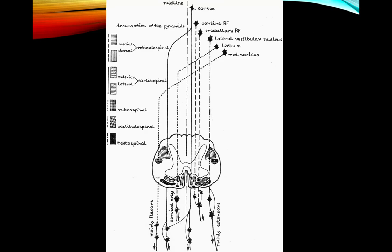All of these upper motor neuron pathways each have a somewhat different function. The big picture is that all of these pathways together allow the brain to very precisely manipulate anterior horn cells in the spinal cord so that we can perform a wide variety of motor functions accurately and precisely.